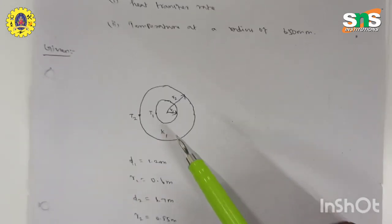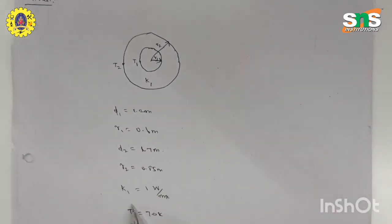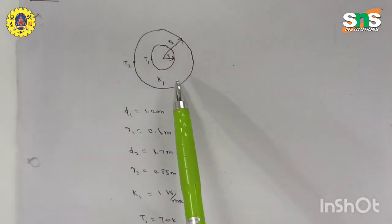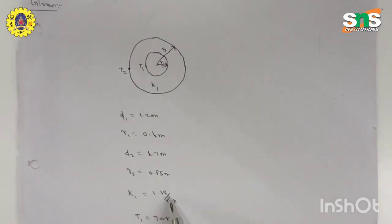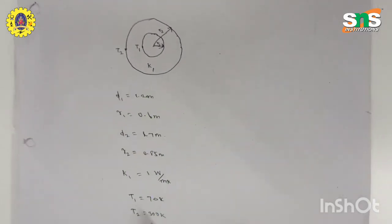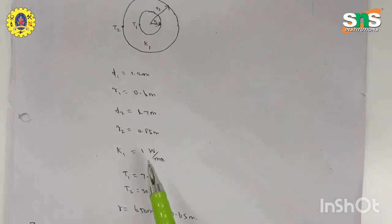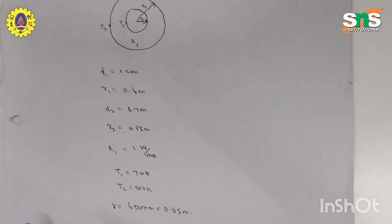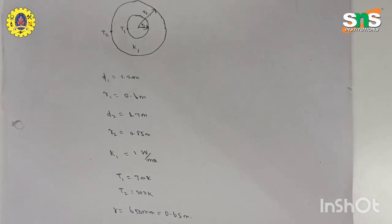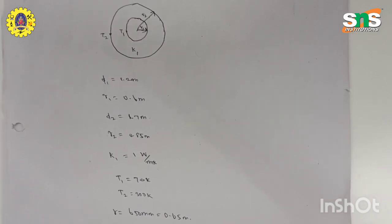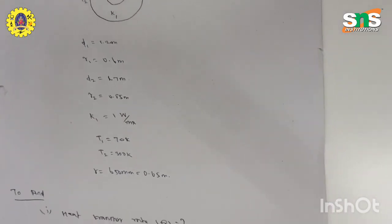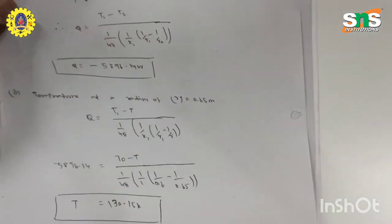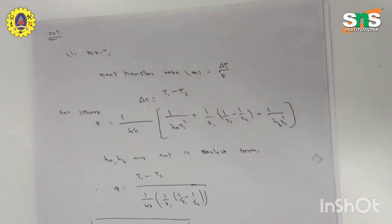From the given data: inner diameter is 1.2 m so inner radius R1 = 0.6 m; outer diameter is 1.7 m so outer radius R2 = 0.85 m; thermal conductivity K = 1 W/m·K; inner surface temperature T1 = 70 K; outer surface temperature T2 = 300 K; and the radius of interest R = 0.65 m. We need to find heat transfer rate Q and temperature at R = 0.65 m.